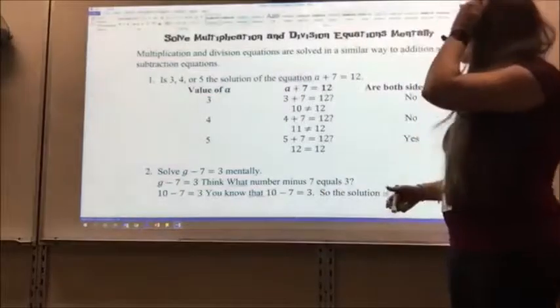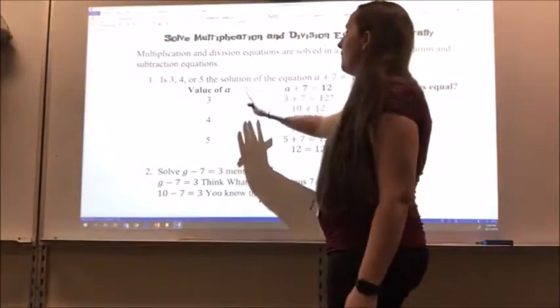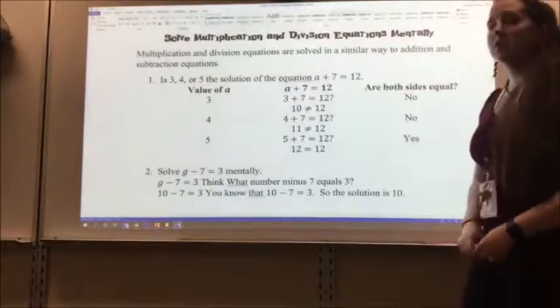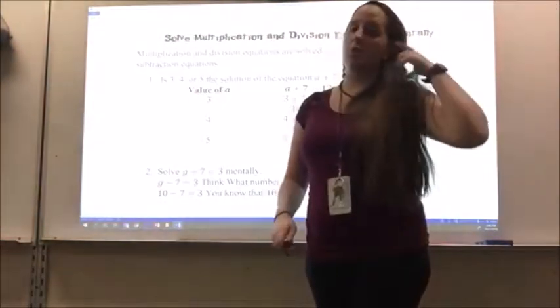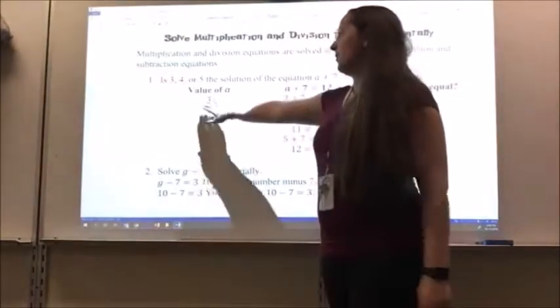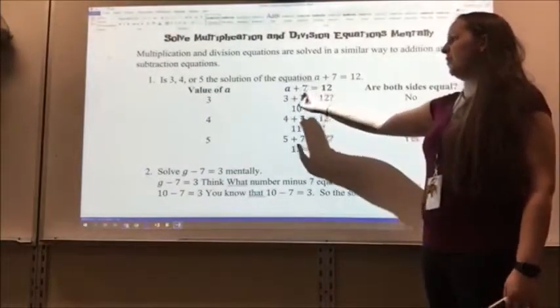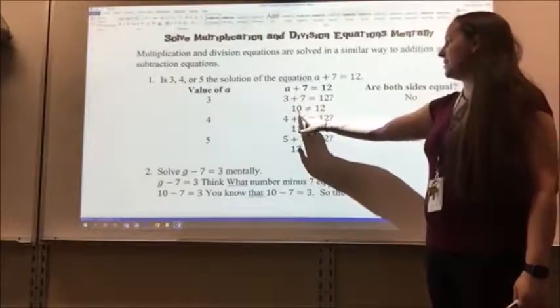So I want to know for my first problem is three, four, or five, the solution of the equation a plus seven equals 12. So I can either just go check through them each, or I can write everything down. So for the value of a is three, my equation was a plus seven equals 12. I substitute in three for a. Three plus seven gives me ten. So this three is not a solution.